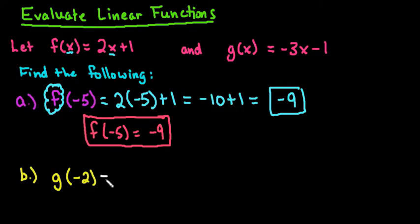For the next one, g(-2), this tells us that we want to use our g equation. So I'm going to look at this equation. I'm going to replace x with whatever value is here. So this one tells me to replace my x value with -2. So I would have -3 times -2 minus 1.